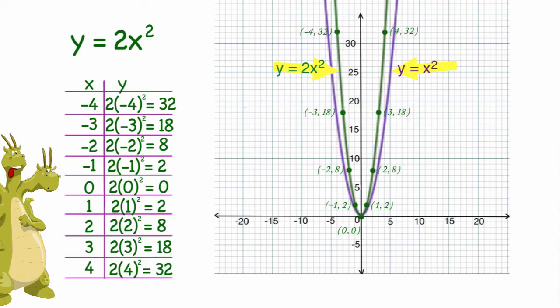And also looking at their formulas, the only difference between y equals x squared and y equals 2x squared is that there is a 2 in front of the x squared. So it looks like putting a number in front of the x squared changes the wideness of the graph.